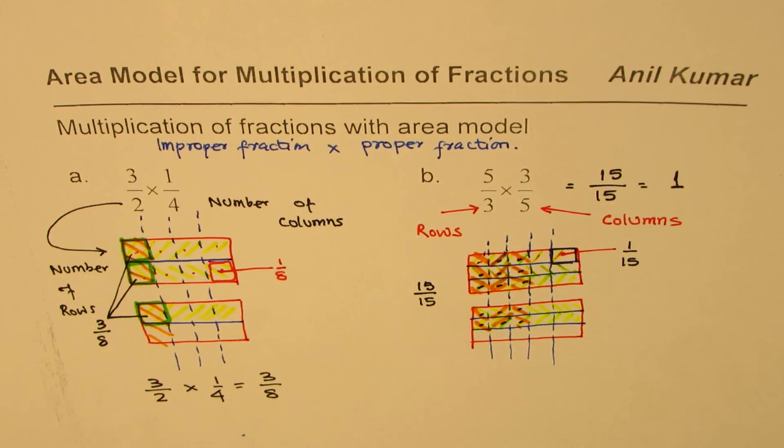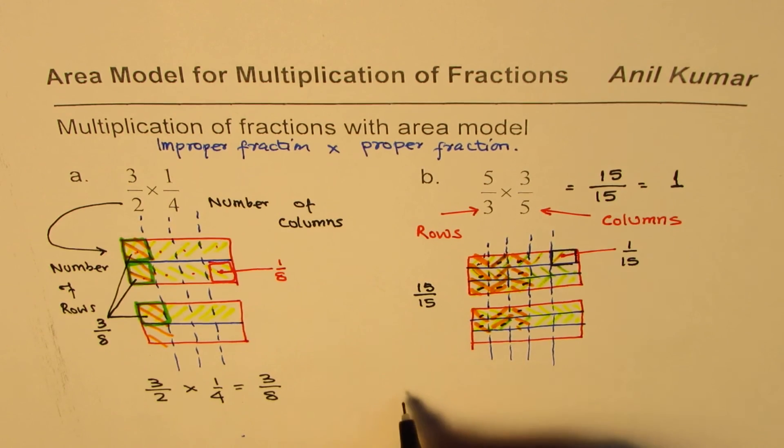So what we get here is equals to 15 over 15, which you know is 1. So that is how you can multiply improper fractions with proper fractions. I hope the concept is absolutely clear.